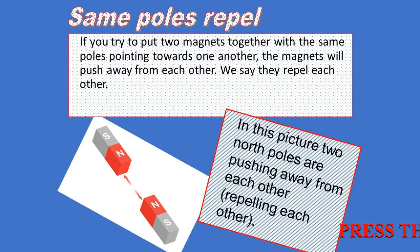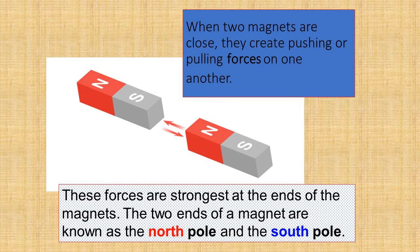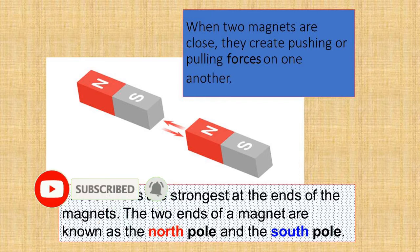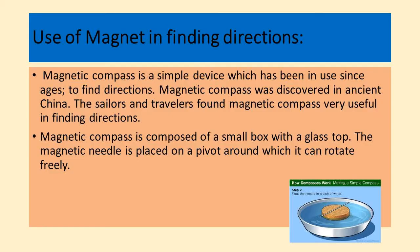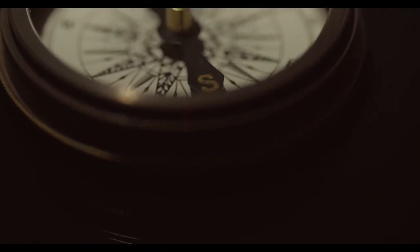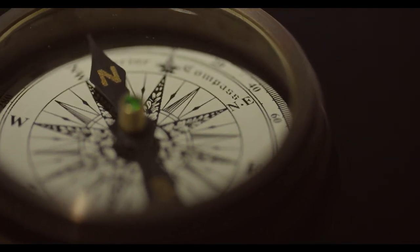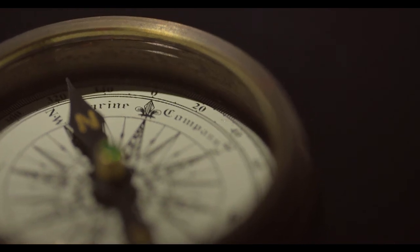That means if we bring two south poles of two bar magnets nearby, they will repel. Unlike poles attract each other — when the north pole of one magnet is brought near the south pole of another magnet, both attract each other. Magnetic compass is a simple device which has been in use since ages to find directions. Magnetic compass was discovered in ancient China. The sailors and travellers found the magnetic compass very useful in finding directions. It is composed of a small box with a glass top and a magnetic needle pivoted on a pivot around which it can rotate freely.